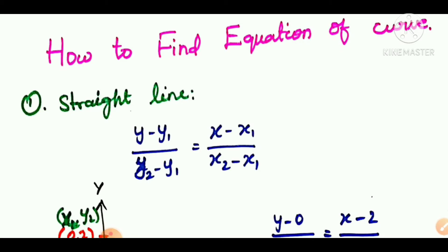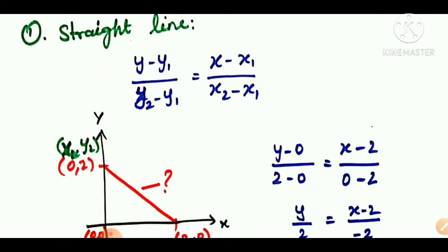Let's see how the equation is defined. From the last video, the graph could be a straight line or a parabola. The line equation formula is: y minus y1 divided by y2 minus y1 is equal to x minus x1 divided by x2 minus x1.